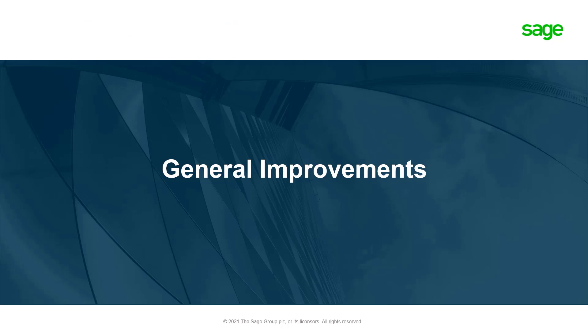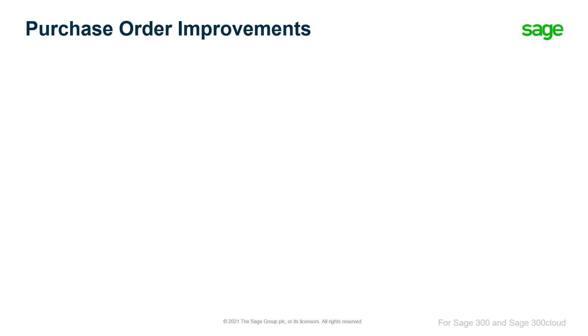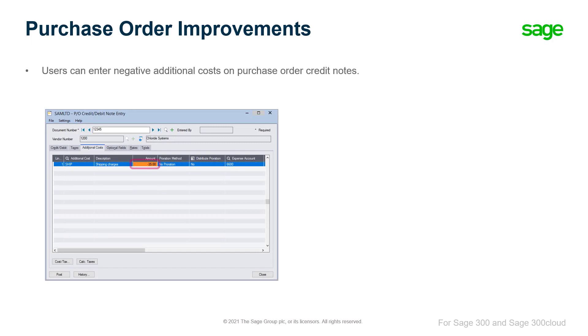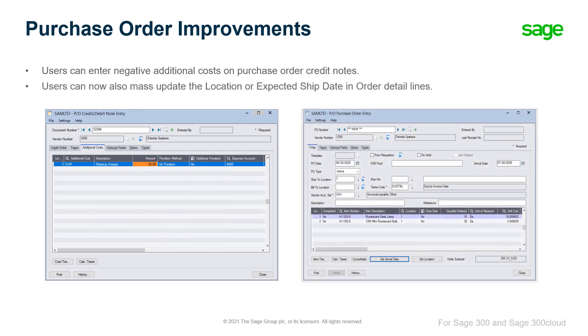Time to look at general improvements, which are available for both web and desktop users. Sage 300 version 2022.0 includes improvements to purchase orders and order entry. With this version, users may now enter negative additional costs on purchase order credit notes, as well as set the expected arrival date and location for all details on a purchase order. More information on this new feature is available in the purchase order improvements in Sage 300 2022.0 video.